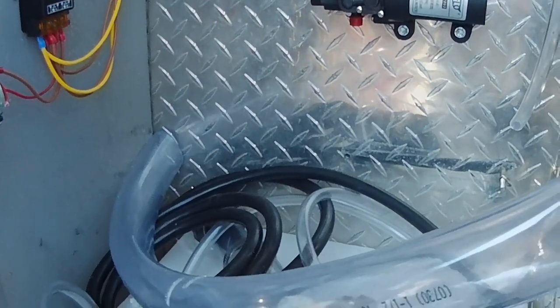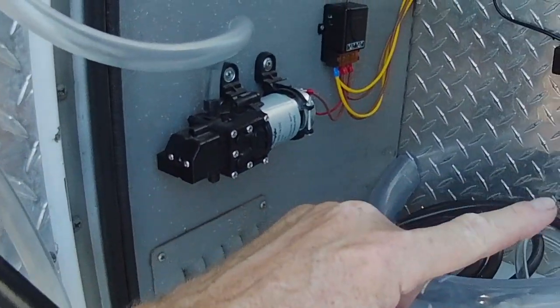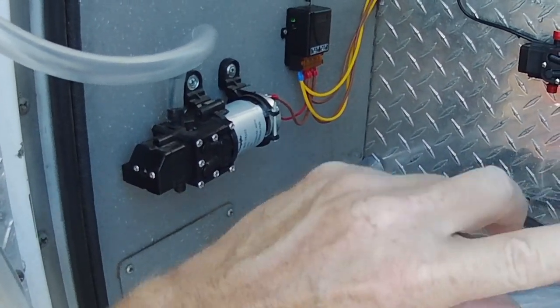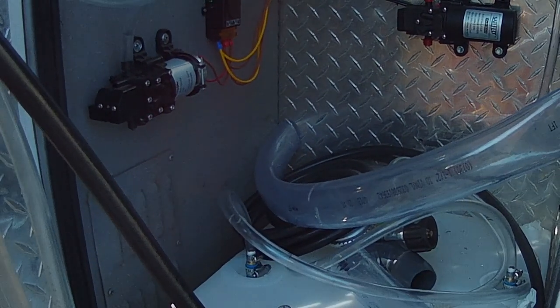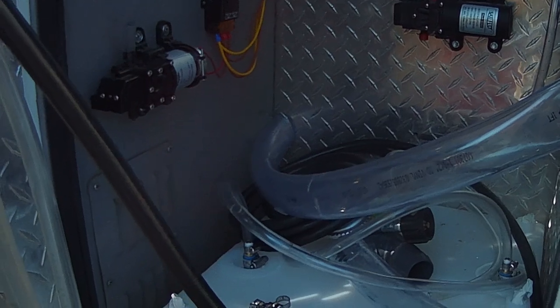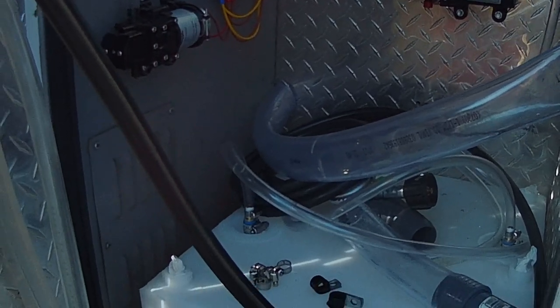Today all we gotta do is hook up these last couple of hose connections out here and hook up that wiring I showed you and mount the faucet inside. And that's it. We're done. Then we're gonna put some water in it and turn it on. Let's do this.